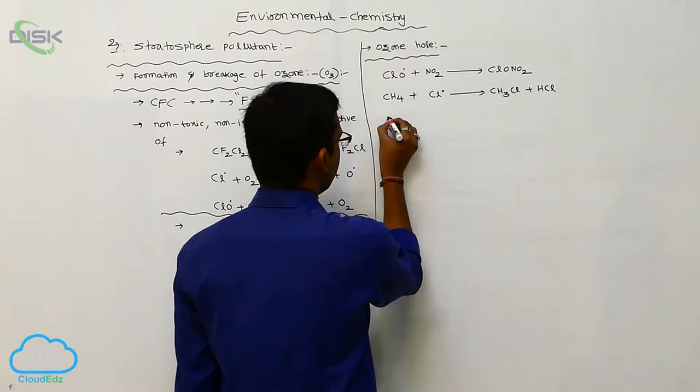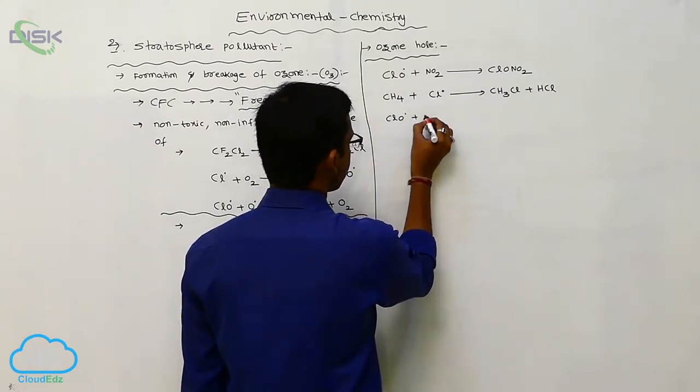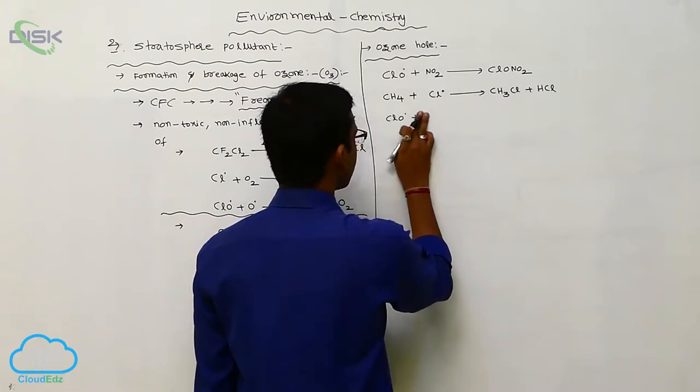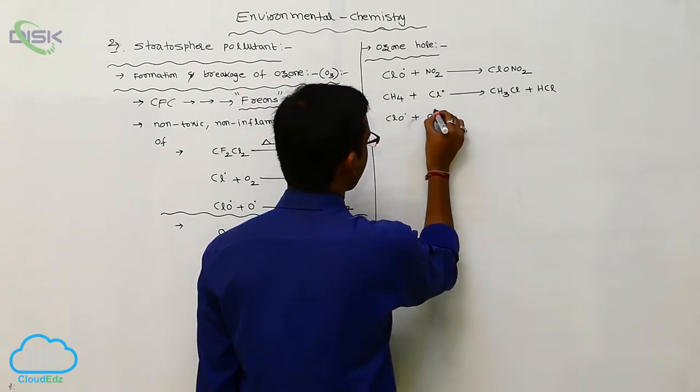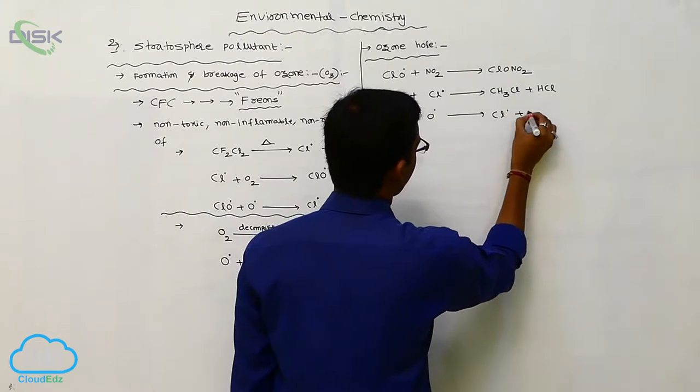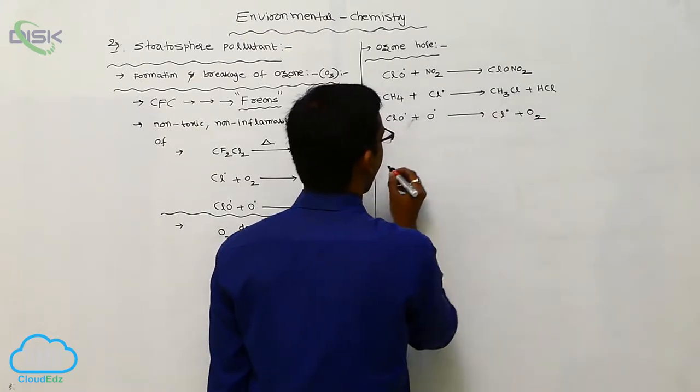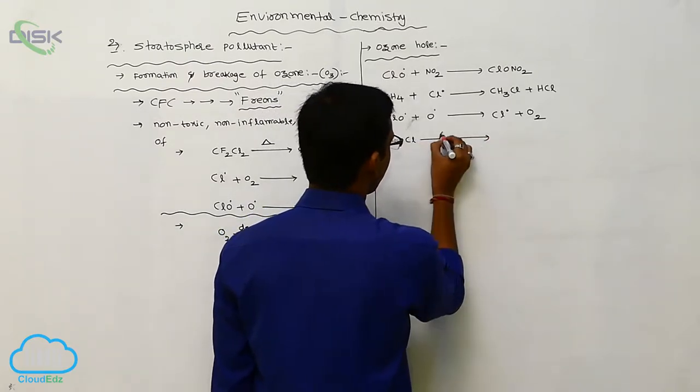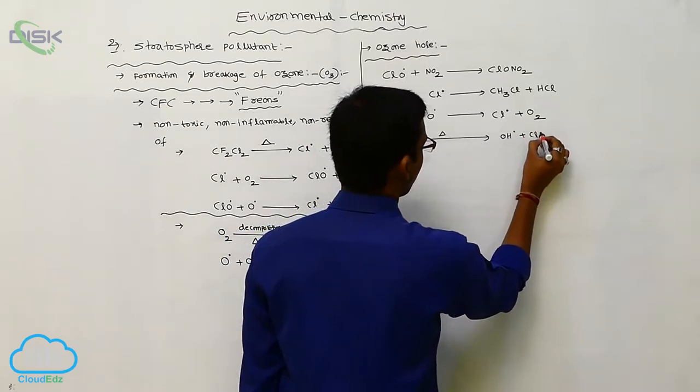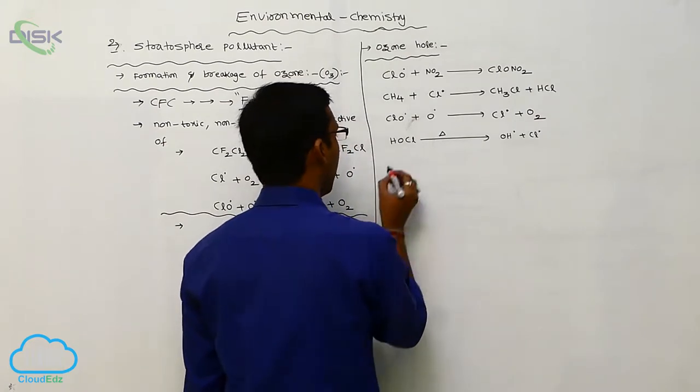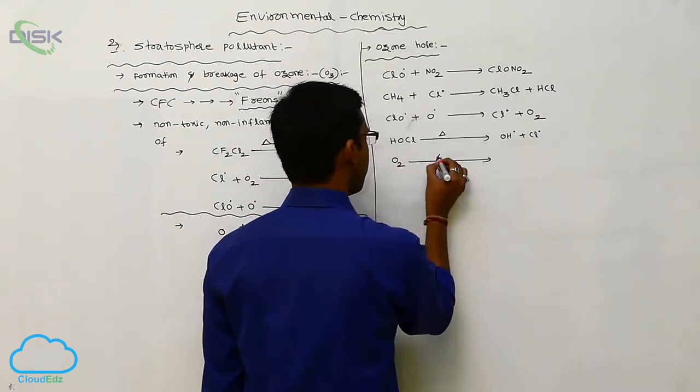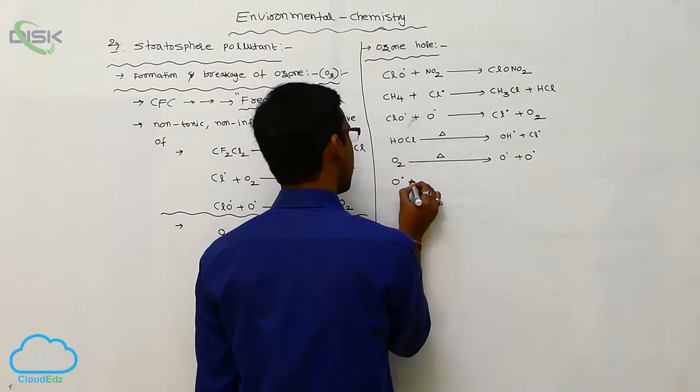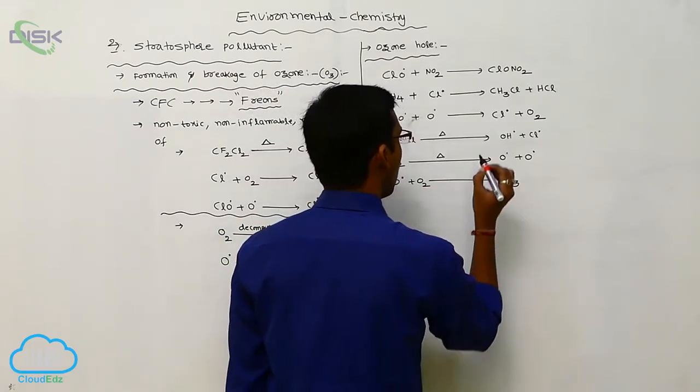And next one is, ClO is reacted with HO or this chlorine radical. This chlorine radical is reacted with oxygen radical, it gives chlorine radical plus oxygen. And next one is HOCl. This HOCl undergoes decomposition, gives OH radical plus chlorine radical or oxygen undergoes decomposition, gives ozone radical, two types of oxygen radical. In that one, oxygen radical is reacted with oxygen molecule, produce ozone.